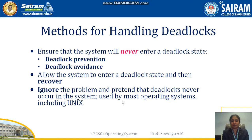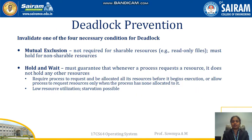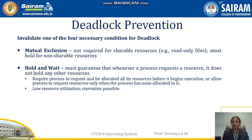First we will see how to prevent deadlock. For prevention of deadlock, we have to invalidate the four necessary conditions of deadlock. As we know, there are four conditions which occur simultaneously leading to deadlock, so invalidate any one of these conditions so that deadlock never occurs. First is mutual exclusion.